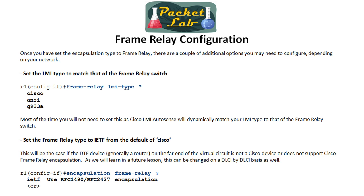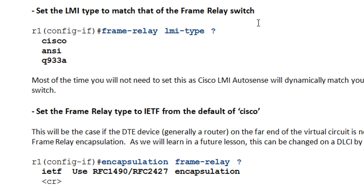Nine times out of ten, especially in a pure Cisco environment, that's all you have to do to turn on Frame Relay — just set the encapsulation. Depending on your circumstances, you might need to set your LMI type to match the Frame Relay switch. The LMI type on your interface must match that of the Frame Relay switch. There are three types: Cisco (which is the Gang of Four standard, not Cisco proprietary), ANSI, and Q933A (Annex A and Annex D). By default Cisco devices run Cisco LMI, but you typically don't have to worry because Cisco has LMI AutoSense enabled by default — it sends out all three types and the Frame Relay switch responds only to the one it speaks.